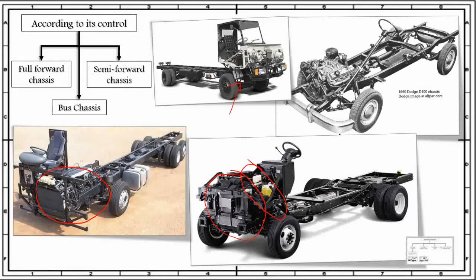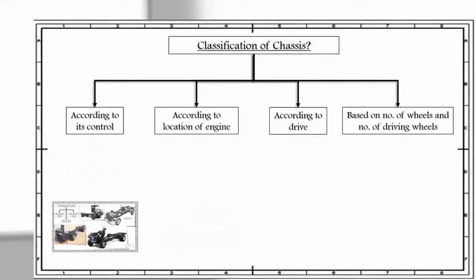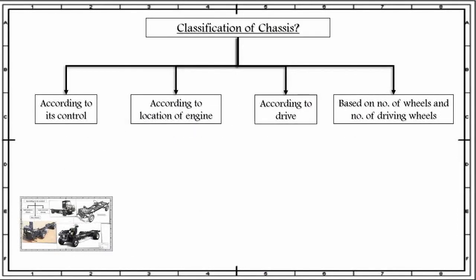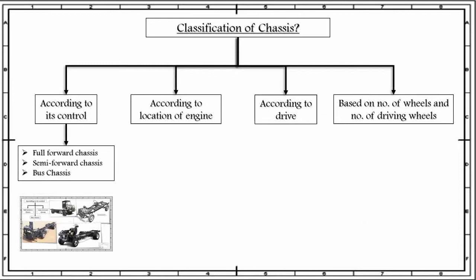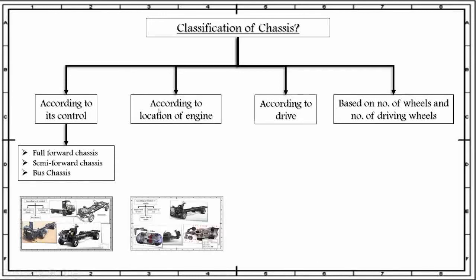Going back to our classification — so far, we have discussed that chassis can be classified according to its control, with types being full forward chassis, semi-forward chassis, and bus chassis. The second type of classification of chassis is according to the location of engine.